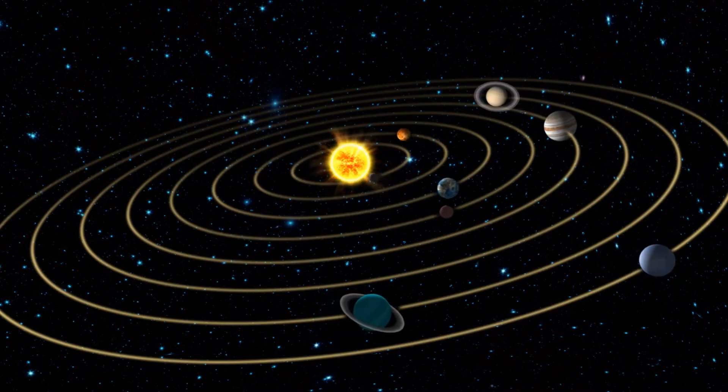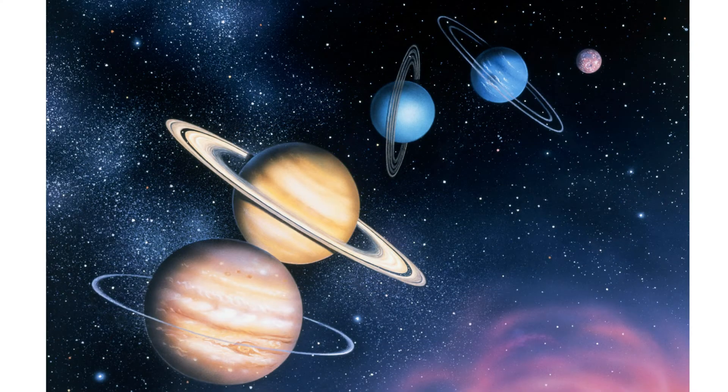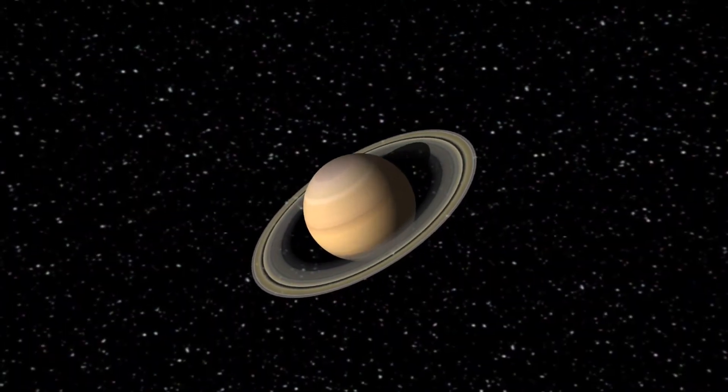Each of the Jovian planets have a ring system. Some are faint and Saturn is most famous for its beautiful rings that surround it.